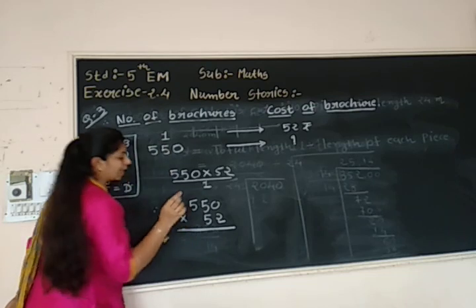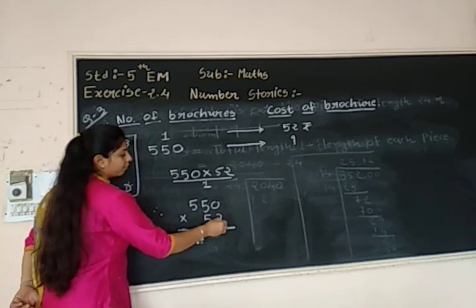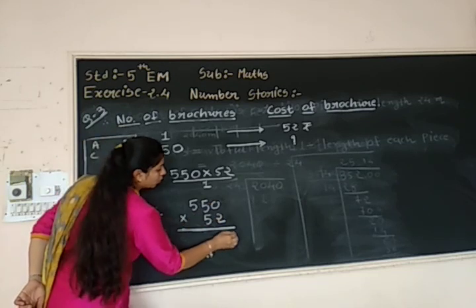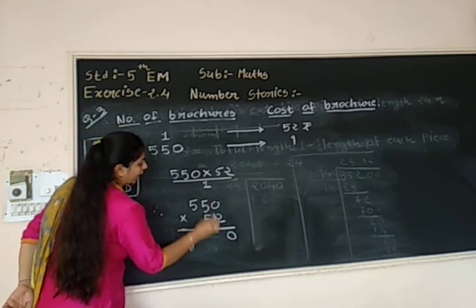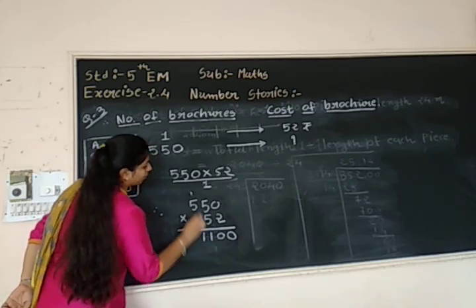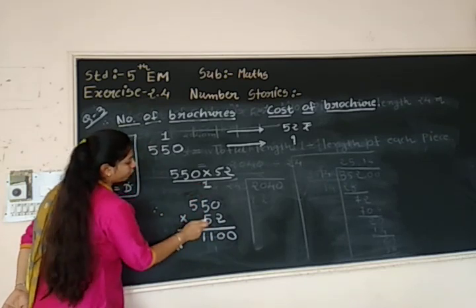Now how to start double digit multiplication? Initiation from units place digit. So 2 into 0, 0. 2 fives are 10. 5 fives are 10. 10 plus 1, 11. Now whose turn? 5.